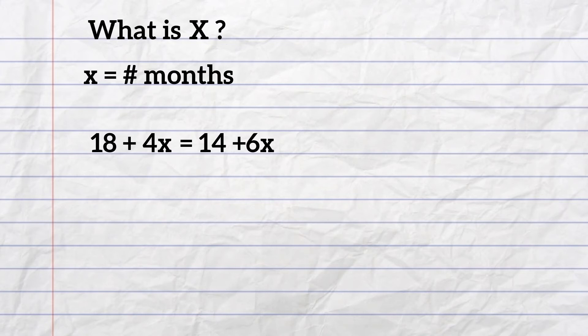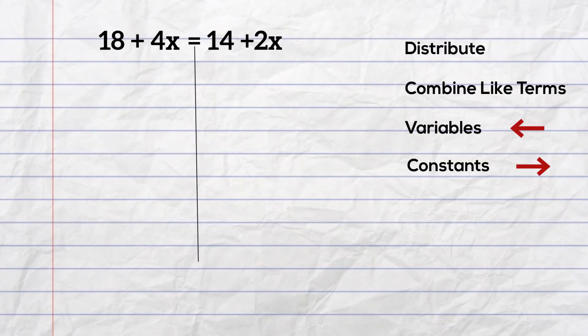Now you need to work these steps for solving a two-step equation. First, you will distribute, then combine like terms, and then move variables to the left and constants to the right. In this particular word problem, we will not need to distribute or combine like terms.